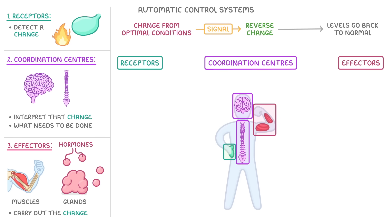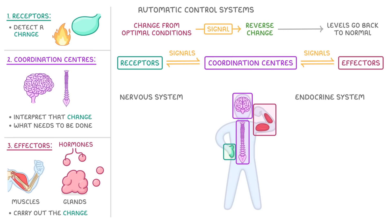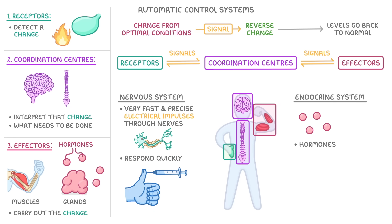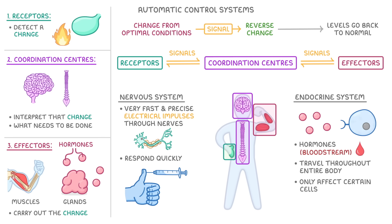A problem though is that these three components might be in different parts of the body, so we need some way to send signals between them, and this is where the nervous and endocrine systems come in. The nervous system sends very fast and precise electrical impulses through nerves, which allows us to respond to things very quickly, such as when we touch a sharp object. The endocrine system, meanwhile, relies on hormones — small chemicals released into the bloodstream that, although they travel throughout the entire body, only affect certain cells that have the right receptors. The endocrine system is generally slower, longer lasting, and more generalised than the nervous system.